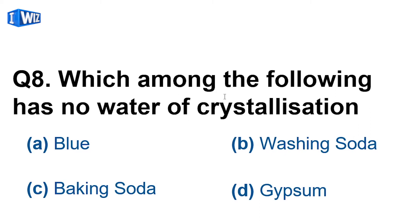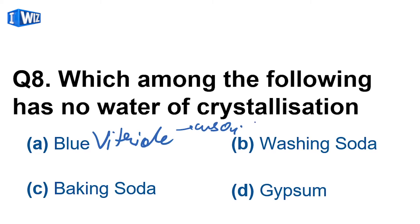Question number 8: which among the following has no water of crystallization? Blue vitriol means copper sulfate — CuSO₄·5H₂O — it has water. Washing soda has water. Gypsum has water. But baking soda does not have water of crystallization. So the answer is baking soda.